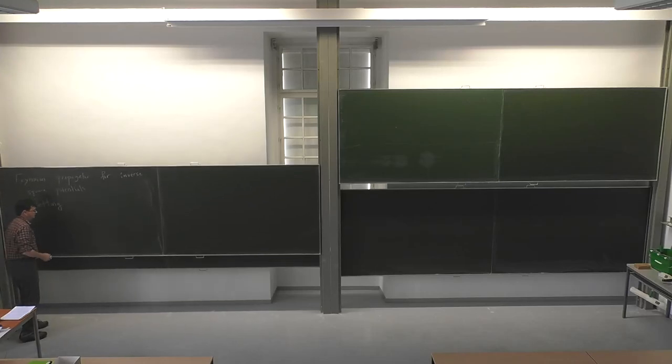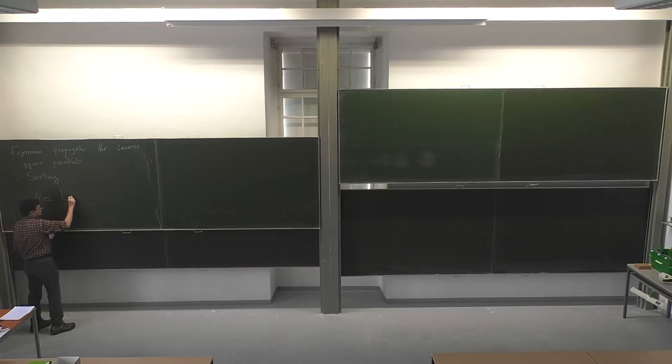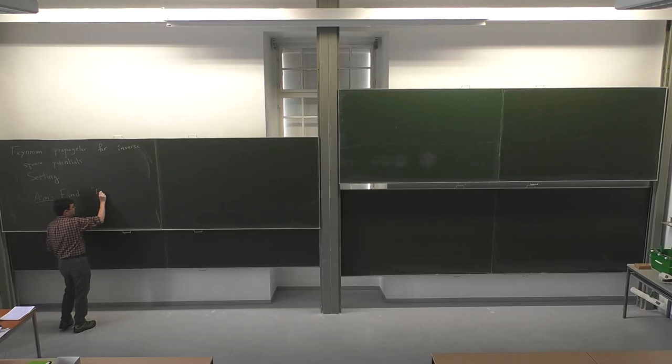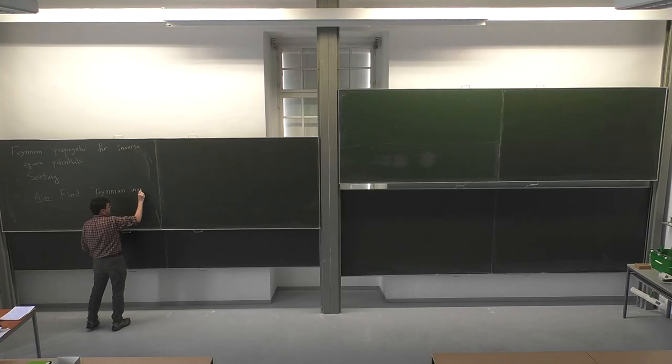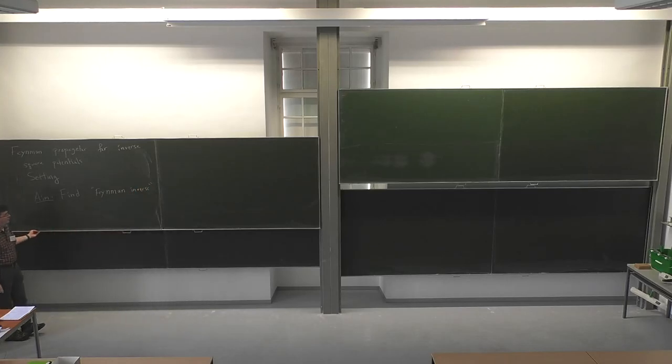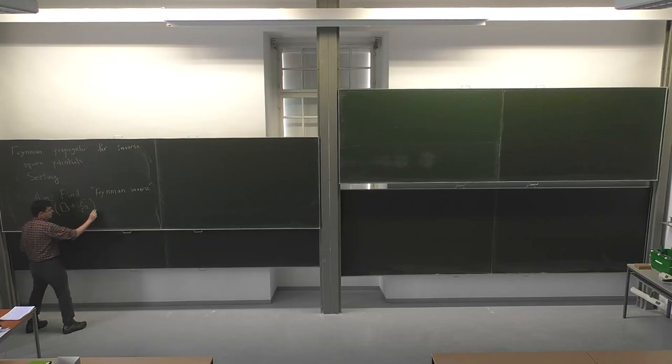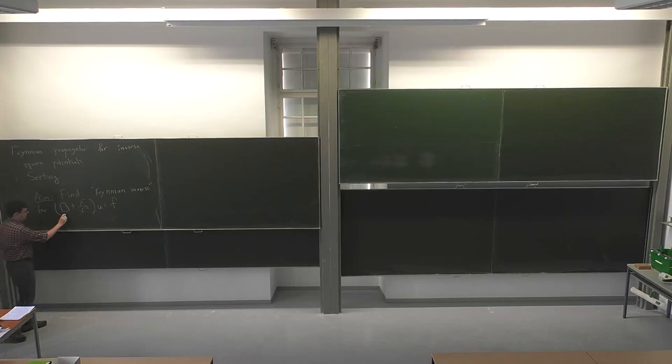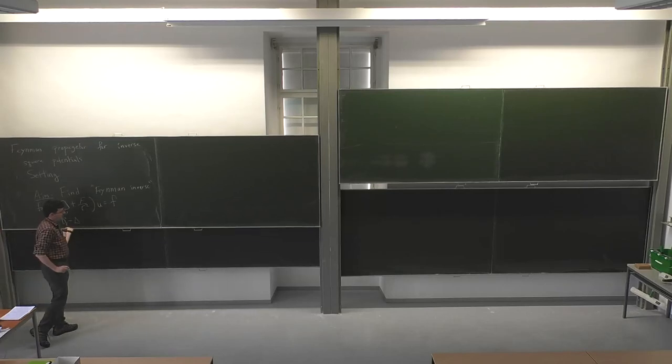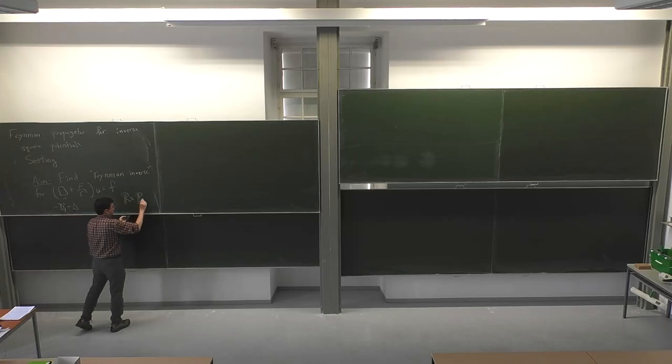So let's describe the setup. So my aim is to find and describe the sort of Feynman inverse, which luckily has been talked at least obliquely about. This board is twice as big as I thought. Oh, that's amazing. OK. That's great. For this sort of problem where I have the wave equation. So I unfortunately do not get to be convention neutral in this talk because I'm going to have a sign restriction on this. So this is the positive definite Laplacian, if you'd like. So here, I'll just work on R^n.